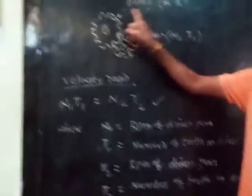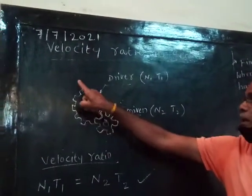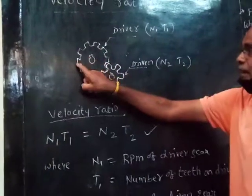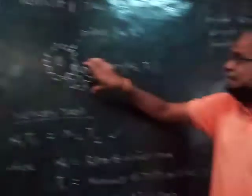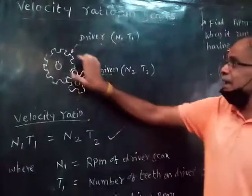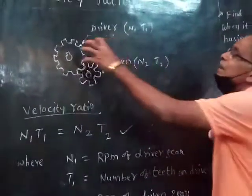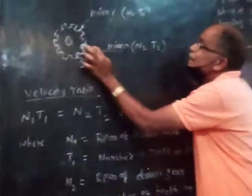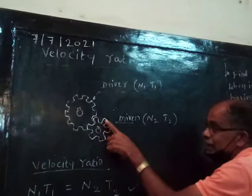To find the velocity ratio, we use the driver gear, which is connected to the main motor and power supply. The driver gear has a number of teeth, called T1. The driven gear has T2, and the RPM values are related through this equation.